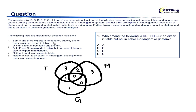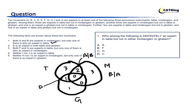Both A and B are experts in Ghatam, but only one of them is also an expert in Tabla. So both are in the Ghatam region, but only one is in Tabla-Ghatam. So if A is in Tabla-Ghatam, B is in Ghatam only, or vice versa. Next, D is an expert in both Tabla and Ghatam — and since there is only one person in that intersection, D is placed there.